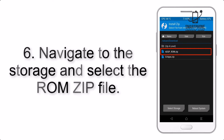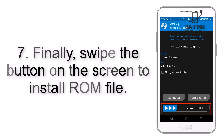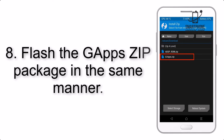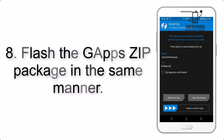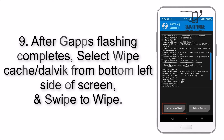Step 5: Go back to the recovery main screen and tap on the Install button. Step 6: Navigate to the storage and select the ROM zip file. Step 7: Finally, swipe the button on the screen to install the ROM file.